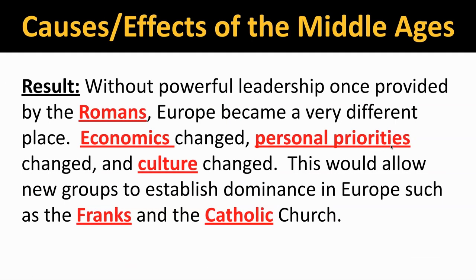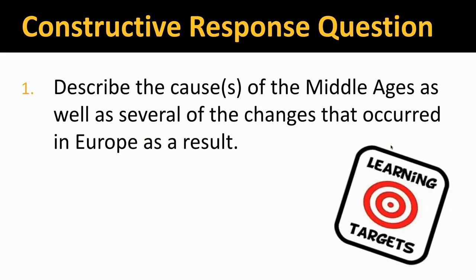That brings us to the end. This is an introduction talking about how Europe changes as a result of the fall of Rome. Without powerful leadership once provided by the Romans, Europe became a very different place — economics changed, personal priorities changed, and culture changed. This would allow new groups to establish dominance in Europe, such as the Franks and the Catholic Church. Our constructive response question asks us to describe the causes of the Middle Ages as well as several of the changes that occurred in Europe as a result. The cause is the fall of Rome, and we went through a long list of effects: changes in languages, loss of learning, loss of trade, loss of cities. Hope you learned something — we'll see you next time.